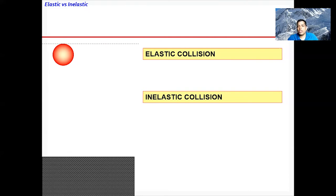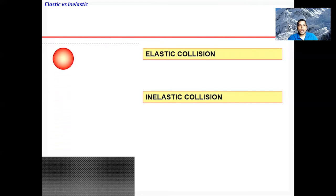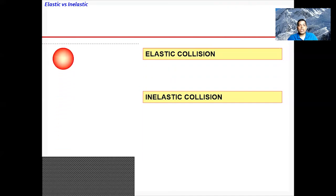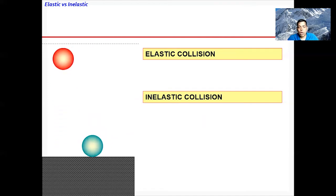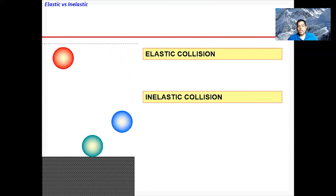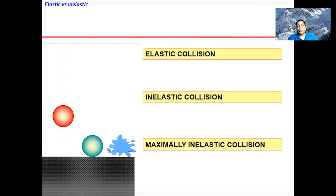Looking at the examples on the right: in case A, the elastic collision, an object falls and bounces back to the same height because no kinetic energy is lost. Elastic collision is an ideal case — in everyday life, collisions are almost always inelastic, as shown in case B where the ball doesn't return to the same height. A completely inelastic collision occurs when the ball sticks to the surface.